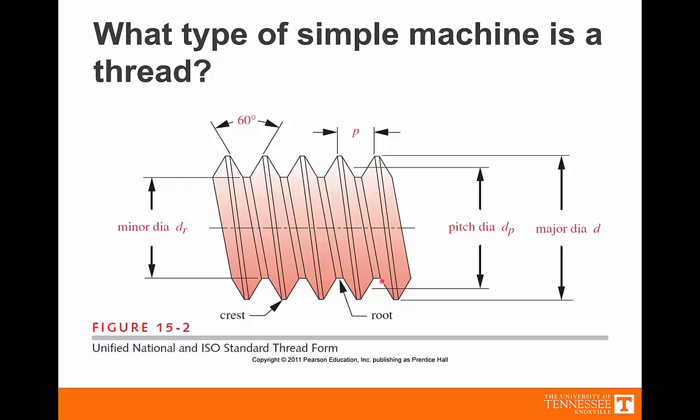They do make what are called multiple start threads in which you might have two, three, or even four starts, so that when the screw is twisted 360 degrees, an object resting on this inclined plane would actually go up not one, but four in the case of a four start thread. So the lead is equal to the pitch times the number of starts.